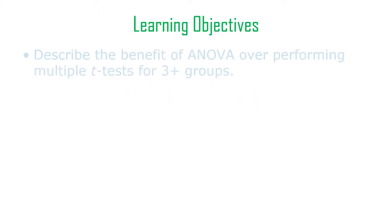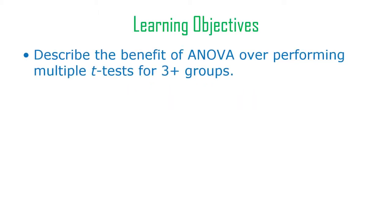The learning objectives here: we need to describe the benefits of using ANOVA over performing lots of t-tests for doing comparisons between the means of three or more groups. With two groups it's pretty easy to compare the means, but with three means there's a problem.